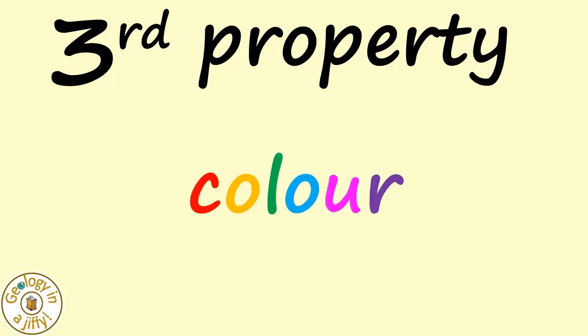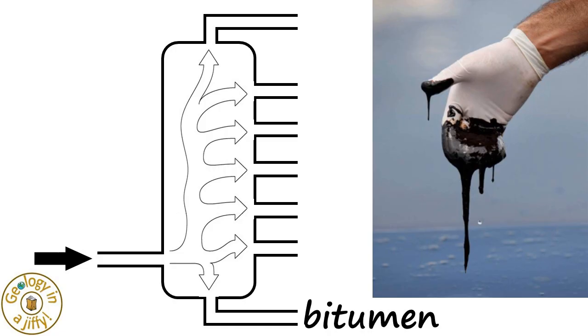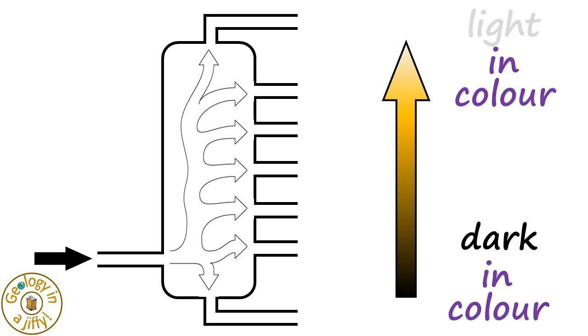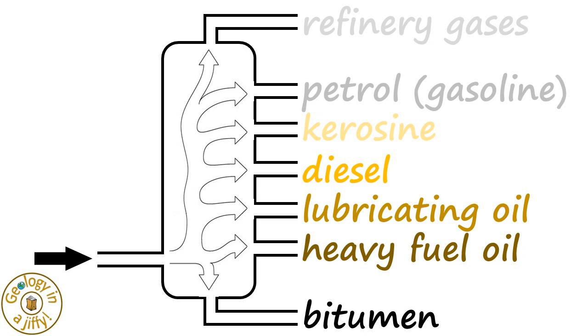The third property is the colour of the fraction. We know that bitumen is very dark brown, black in colour, and as we go up the tower, the colour changes from darker at the base, towards the top of the tower the fraction has become lighter in colour, to colourless at the very top.